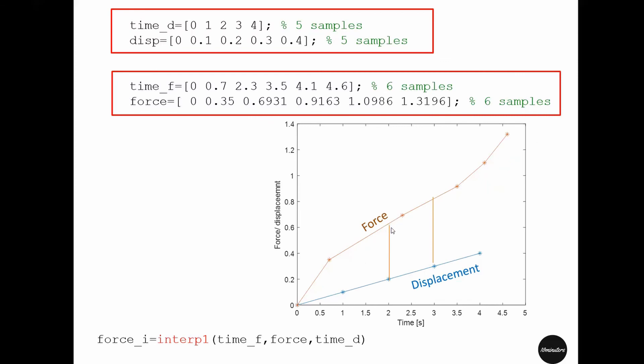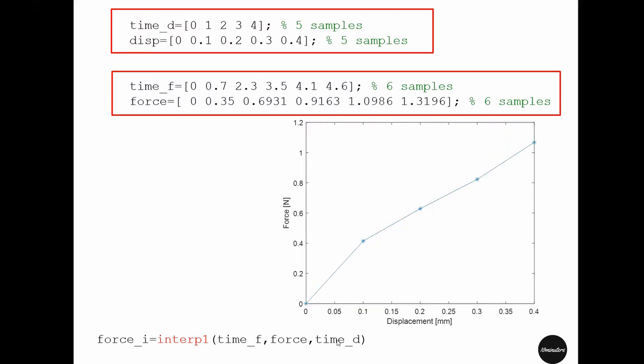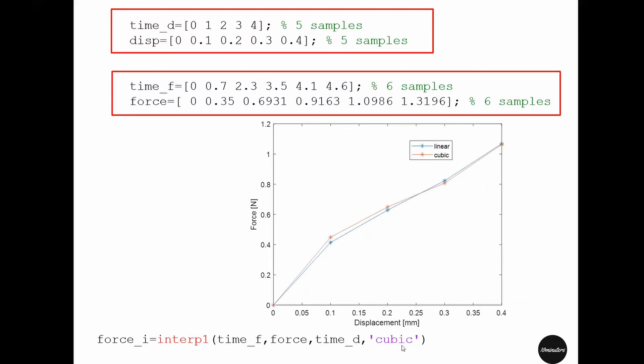For this interpolation, if we want to use more than these two points—because when we use these two points we have only a linear interpolation—we can for example use cubic interpolation. To do that after this third entry in the interp1 function we have to mention 'cubic'.